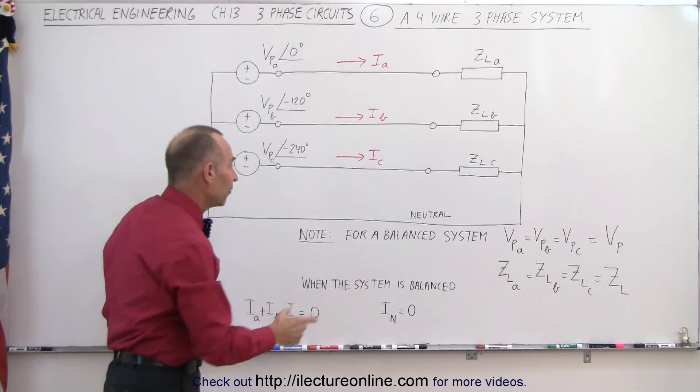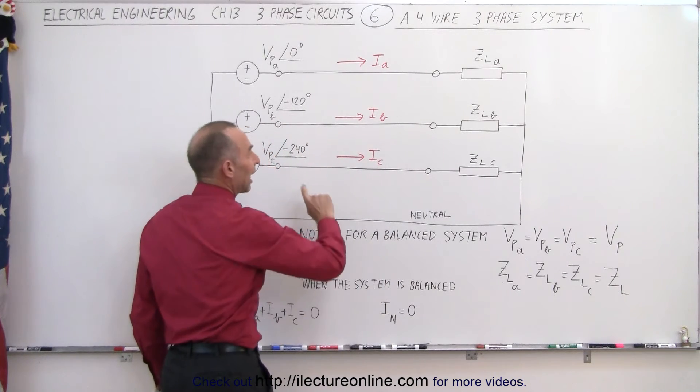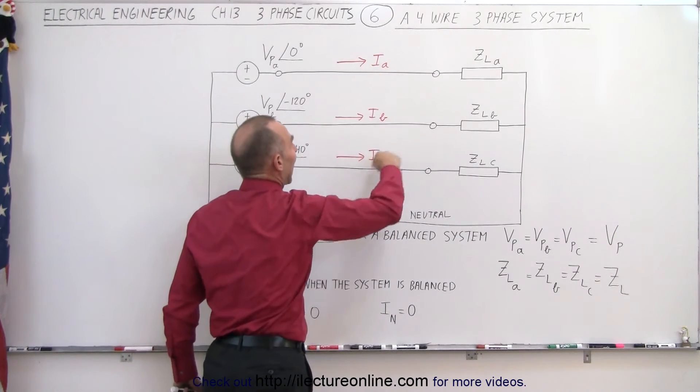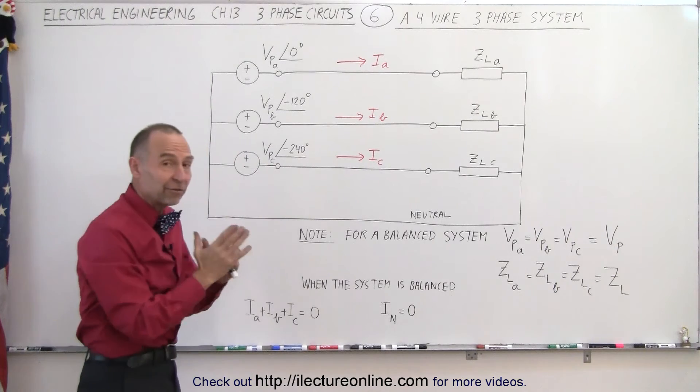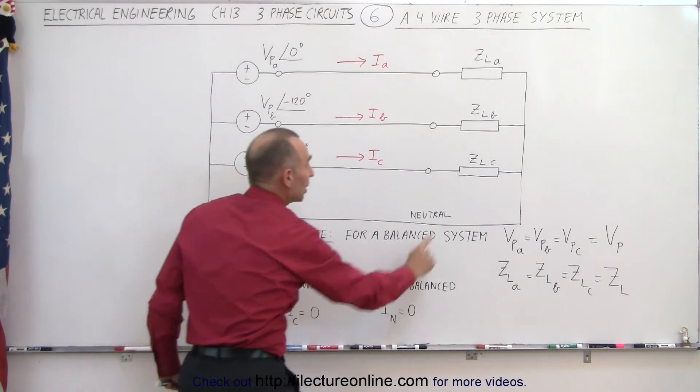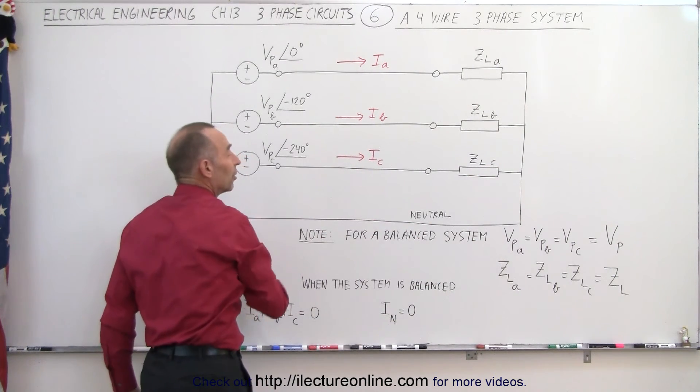And therefore, if a system is balanced, we can say that the currents will add up to zero because of different phases, and therefore the current on the neutral will be zero.